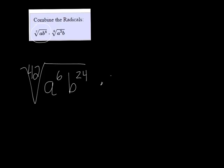And then the second one I multiply everything by 7, so I get the 42nd root of a to the 21st, b to the 7th.